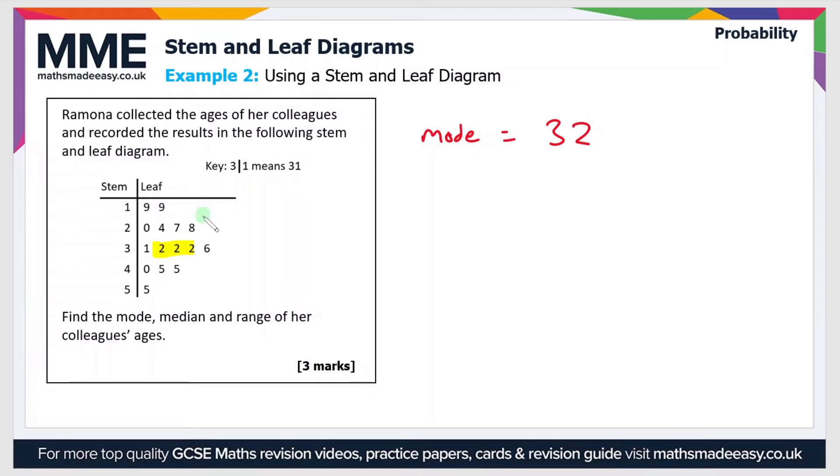Now as for the median there's a good method that you can use for a stem and leaf diagram and that's to cross off the smallest and the largest values and then the second smallest and the second largest values and just keep going with that method. So it gives us a value of 32 again so that's the only one that's left. So that's the middle value, that's the median, is 32.